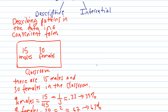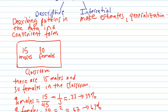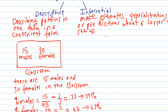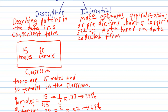What is Inferential Statistics? In inferential statistics, what we're doing is making estimates, generalizations, or predictions about a larger set of data based on data that we've collected from a subset.